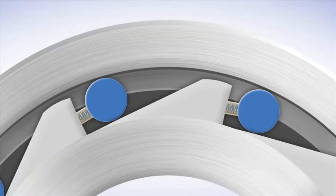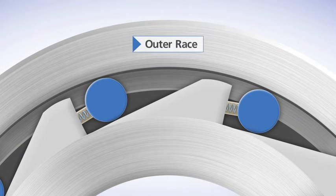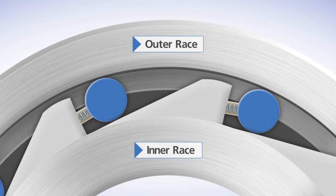Trapped roller clutches consist of a cylindrical outer race, an inner race with ramps and individually sprung rollers.